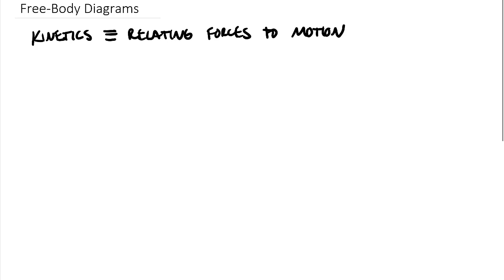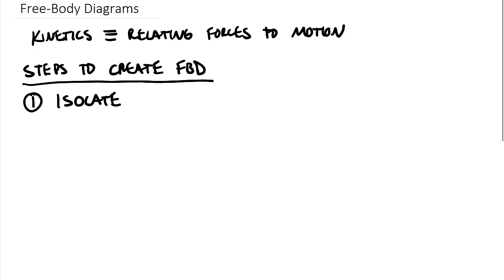Now these steps to create a free body diagram, and these are expanded in the engineering statics textbook. There are some different steps out there, you're going to see a ton of similarities between them if you read different textbooks. This is the steps that we use here in this class and the first is to isolate. We need to isolate the body, and I'm putting parentheses here, or group of bodies.